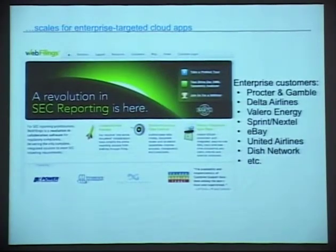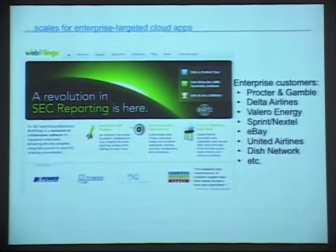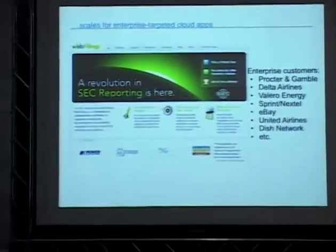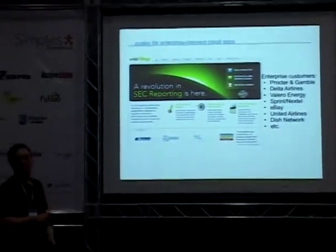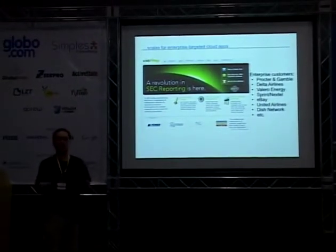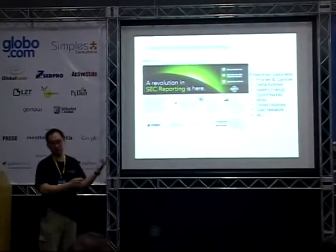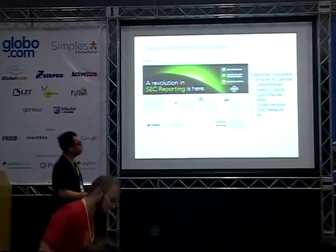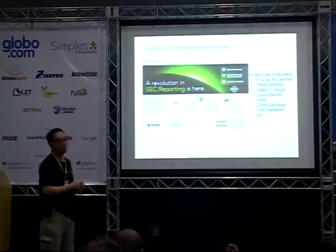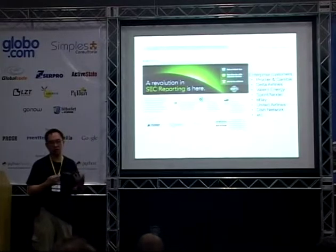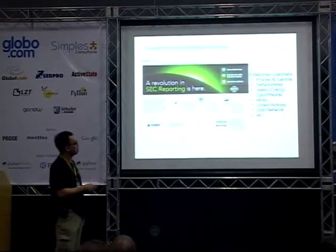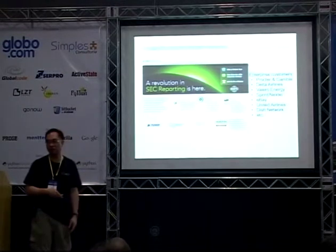Big American companies have to report financial information to the government every quarter. A company built a web app in the cloud that lets them upload their CSV or Excel files, automatically format everything, and send it to the government. They have a lot of big customers depending on this small company, which is depending on App Engine — so there's a lot of trust placed in the platform.